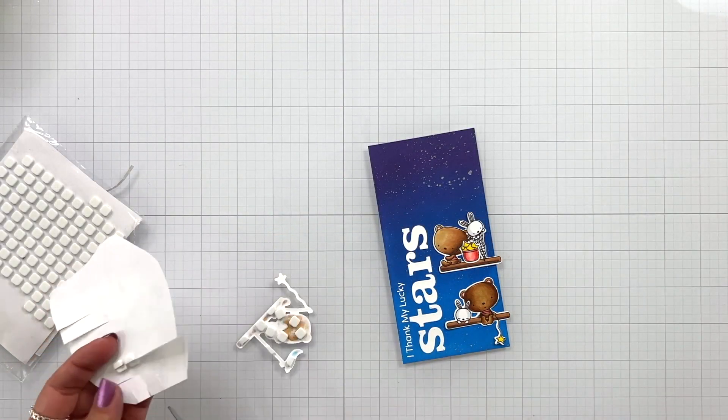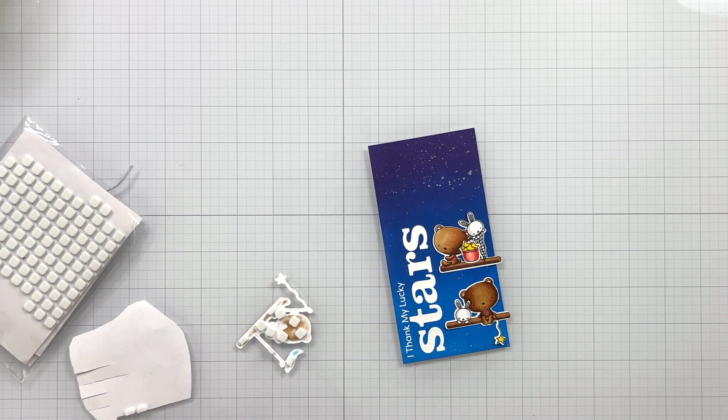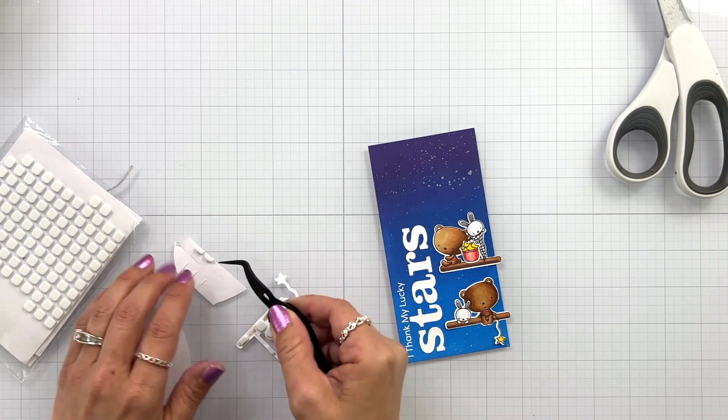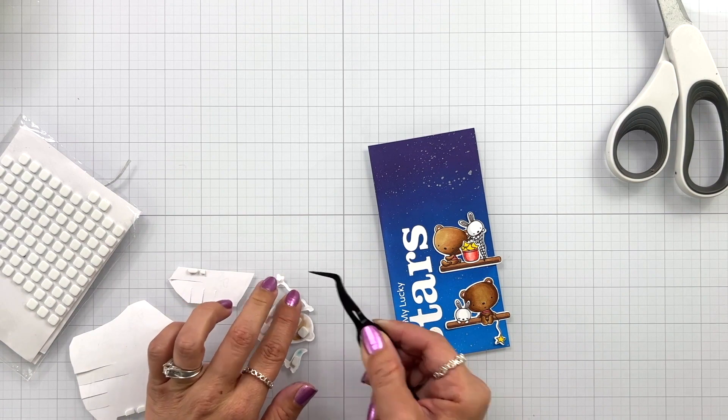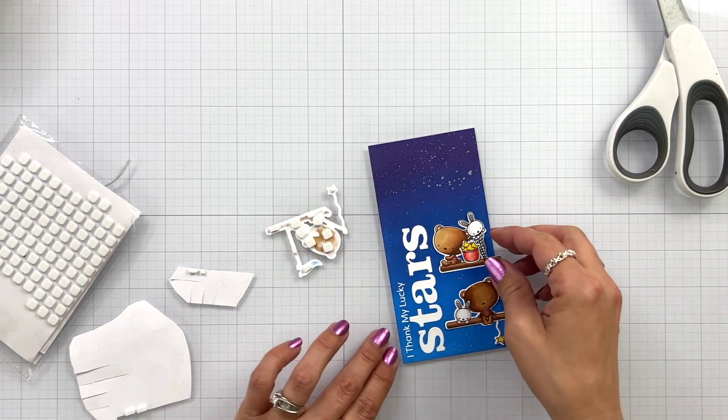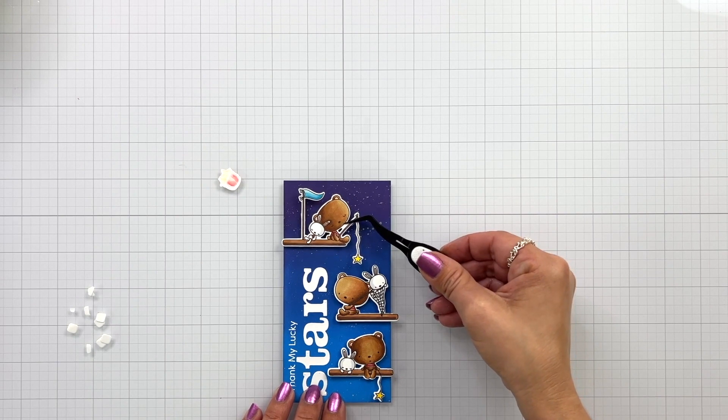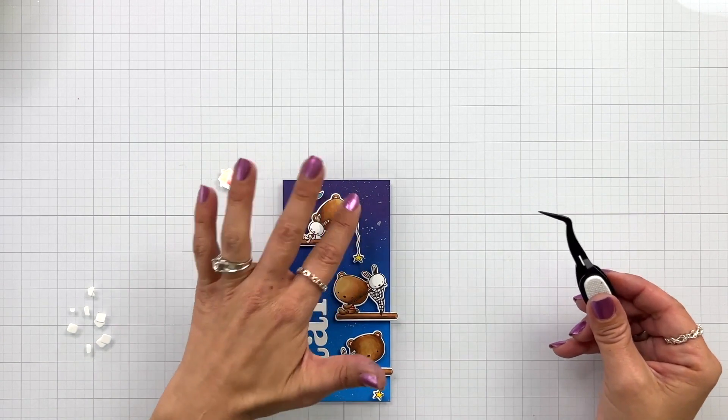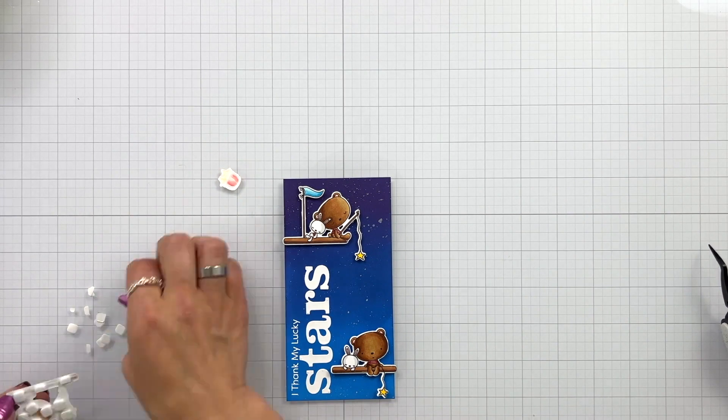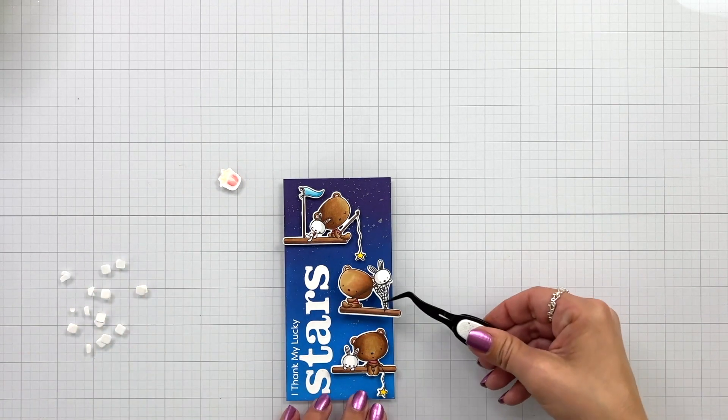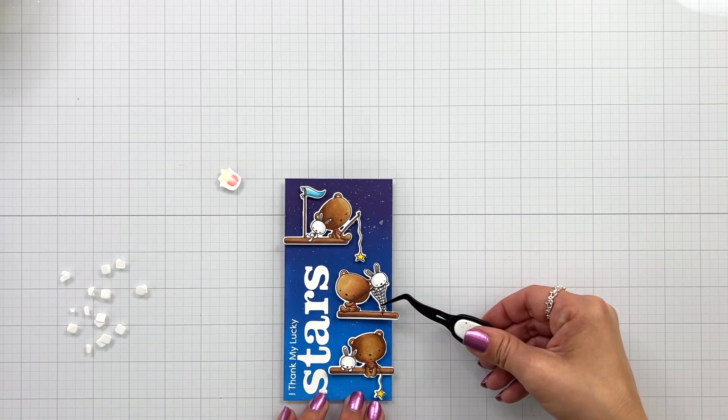I am adding small foam squares behind each of my images. Some of the foam squares I had to trim down into little tiny squares to fit behind some of these smaller areas just to make sure that there is even coverage. Then I can peel off the backing and I'm starting with the bear that's at the top. I thought it was super cute with having that little pole and the star hanging down.